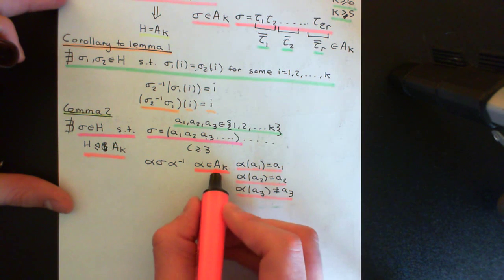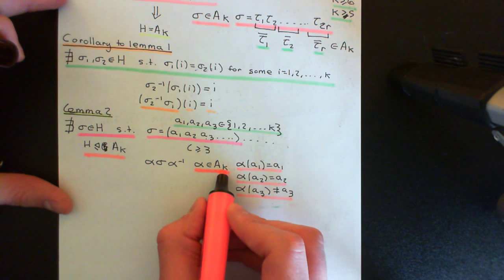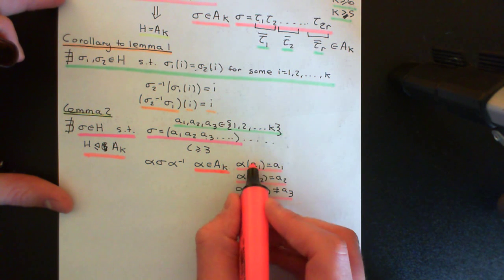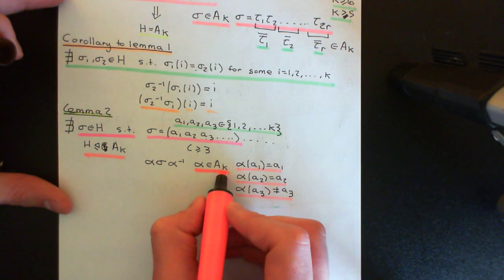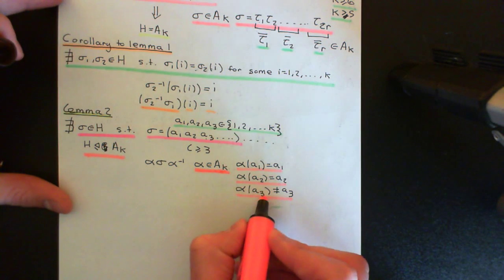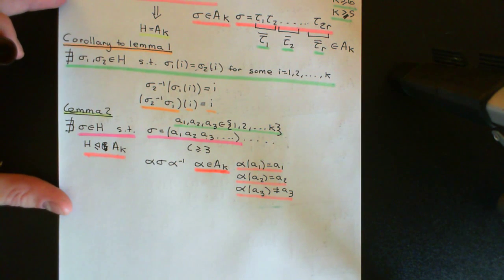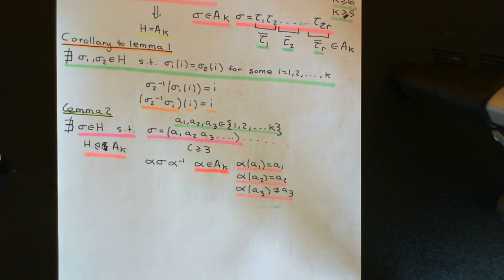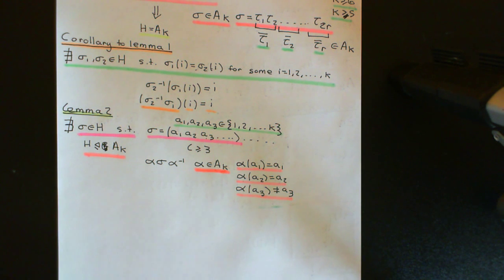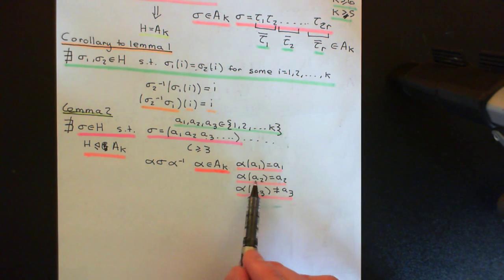Anything that consists of just a 3-cycle and then loads of 1-cycles will always be an even permutation and therefore in A_k. We're working with k ≥ 5 — really k ≥ 6 in the inductive step. Even if k = 5, you'd still be able to find this: you could have a1 and a2 fixed and the other three involved in a 3-cycle. For k larger than 5, you could get a3 involved with two other elements in a 3-cycle and fix all the others. So you can find an element of A_k that fixes a1, fixes a2, but does not fix a3.